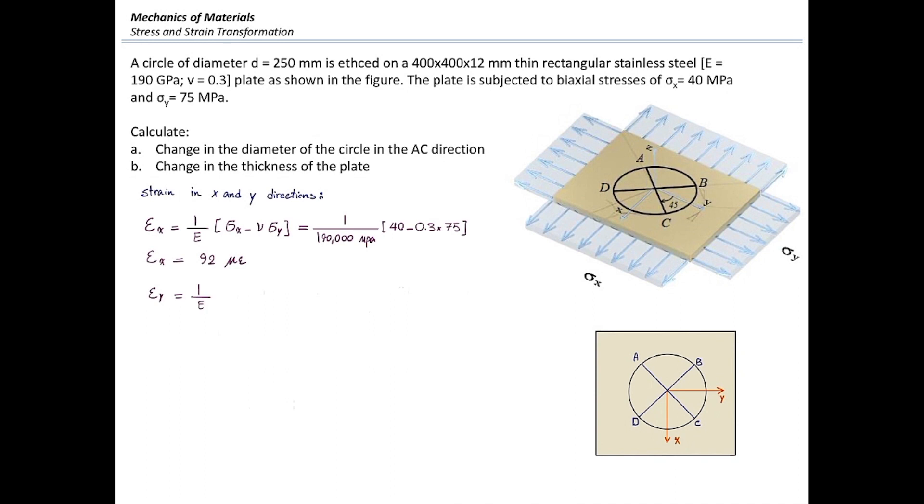Similar to that, epsilon y is determined from 1 over E multiplied by sigma y minus nu sigma x. Plugging in the numbers would give me epsilon y of 332 micro epsilon. So these are the answers for the first two parts of the problem.